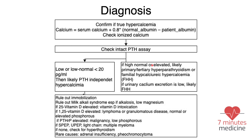Another possibility with elevated PTH is familial hypocalciuric hypercalcemia, which involves a loss-of-function mutation in the calcium-sensing receptor in the parathyroid glands and kidneys. Normally, this receptor shuts down excessive PTH production when calcium is high, and in the kidneys it prevents calcium reabsorption. When the receptor is not working, the result is excessive PTH production, high calcium, and excessive calcium reabsorption in the kidneys — causing hypercalcemia with hypocalciuria.